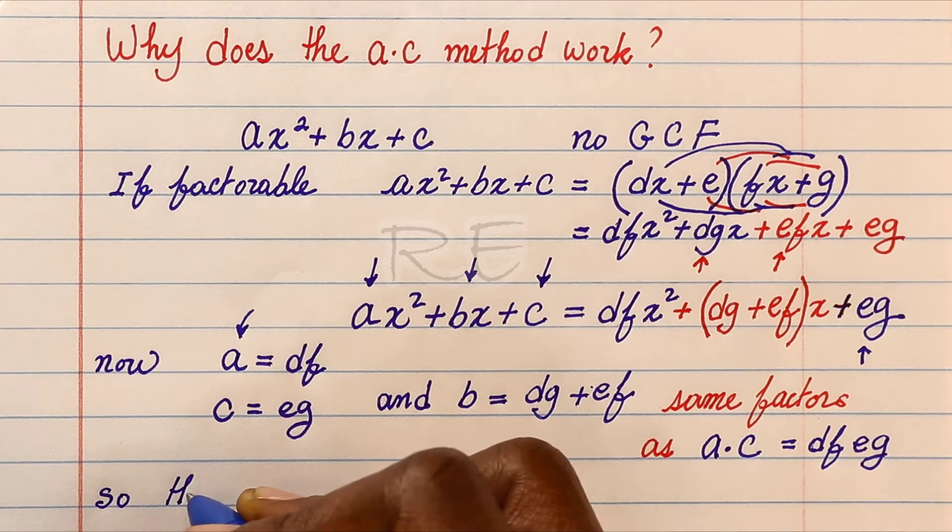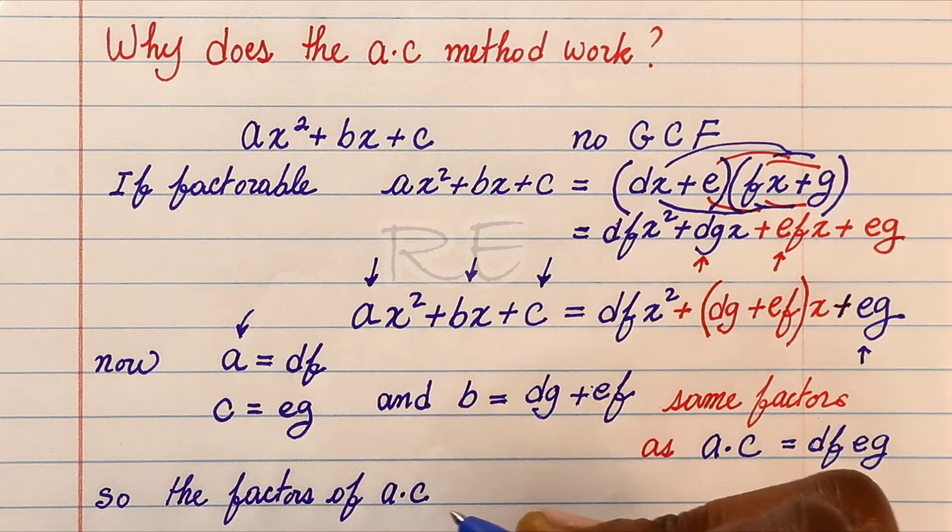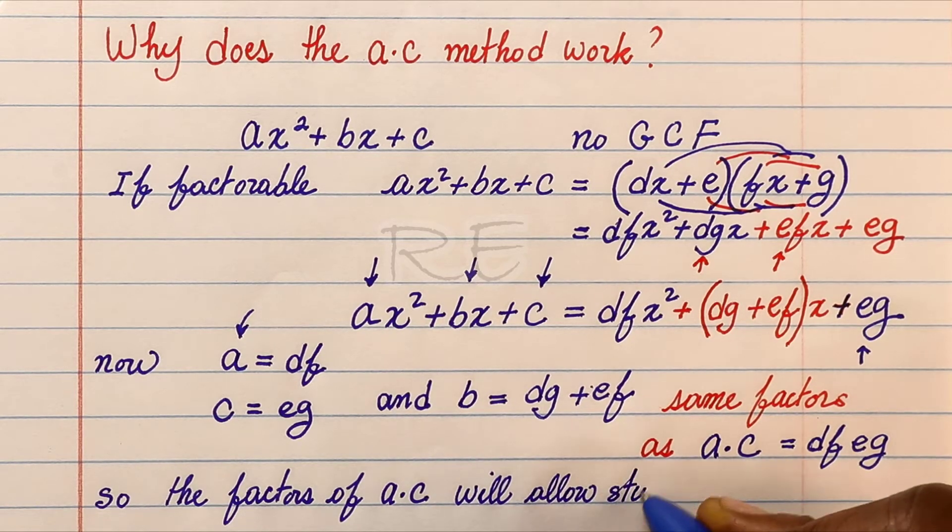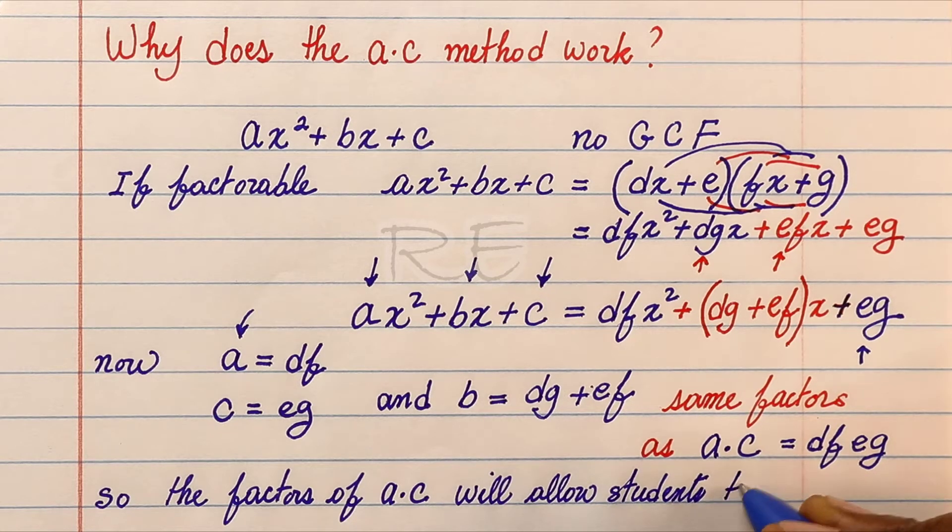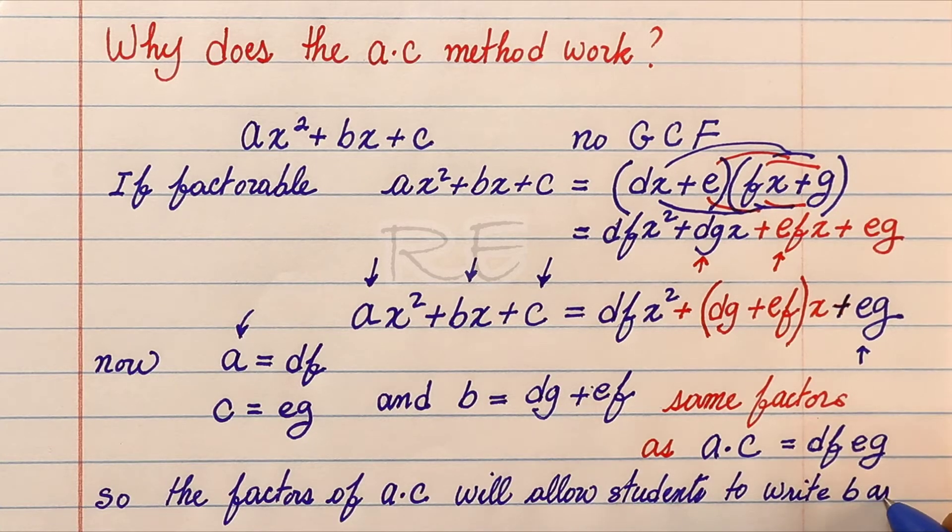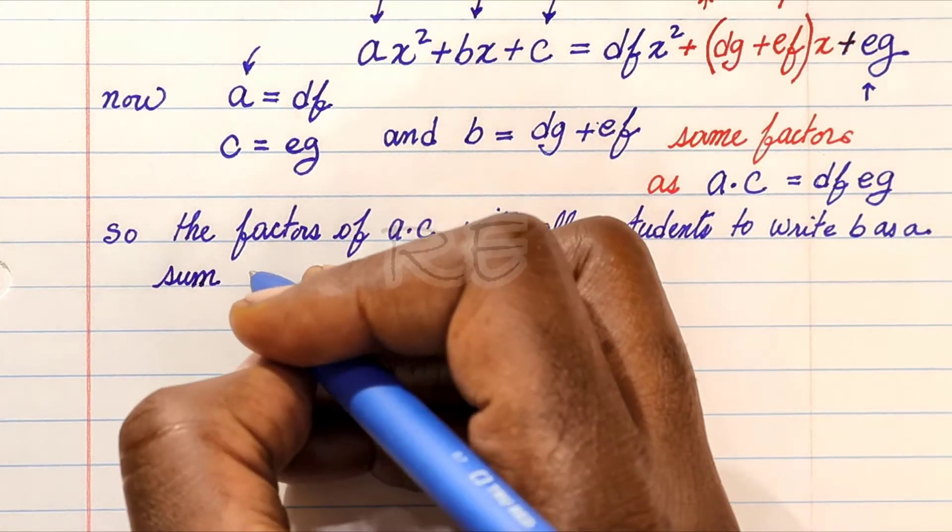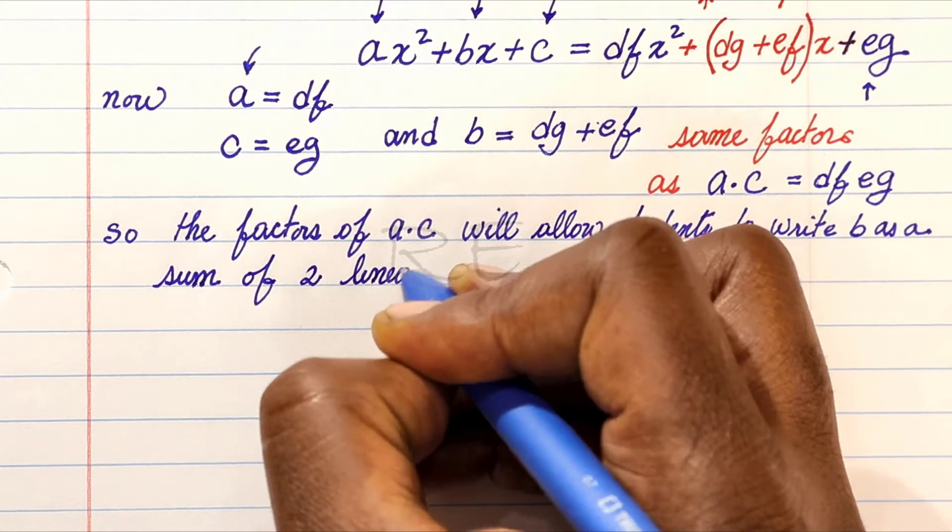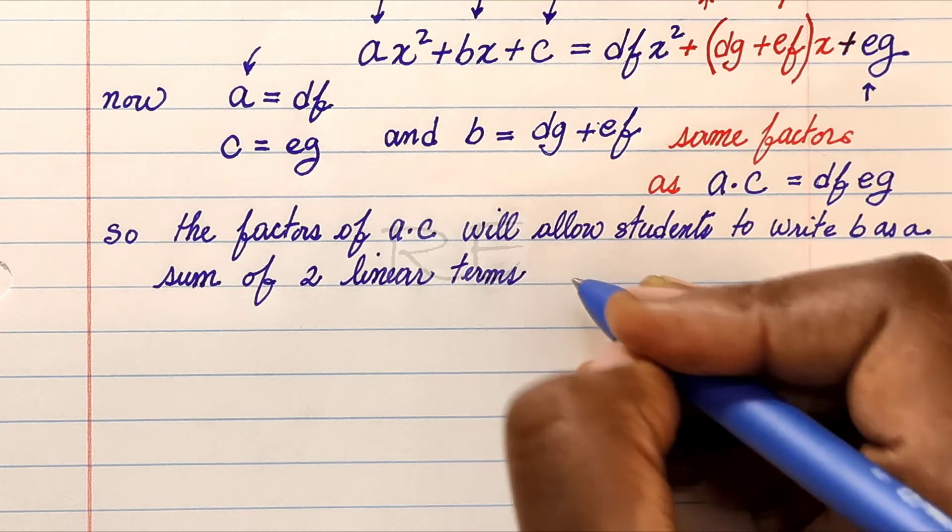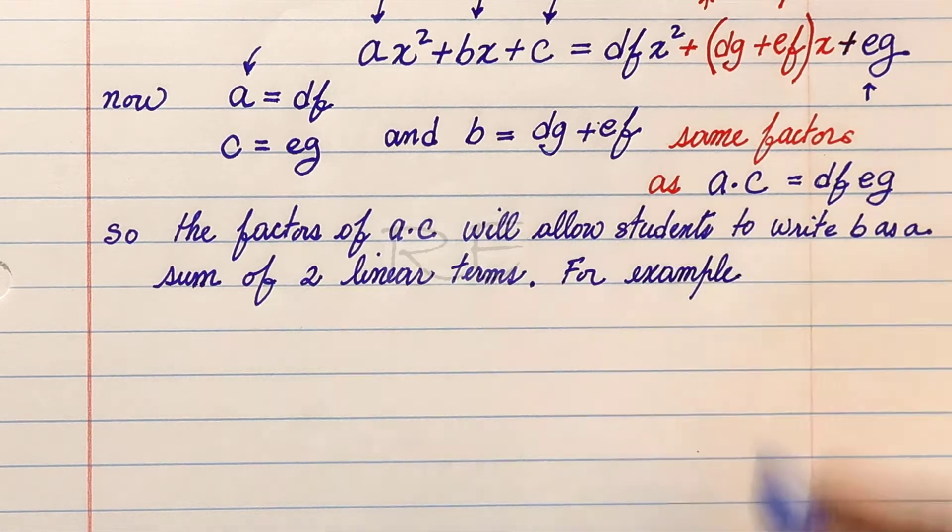What does that mean? It means that the factors of ac will allow our students to split b into a sum of two linear terms. And that's what we want to be able to factor our trinomial.